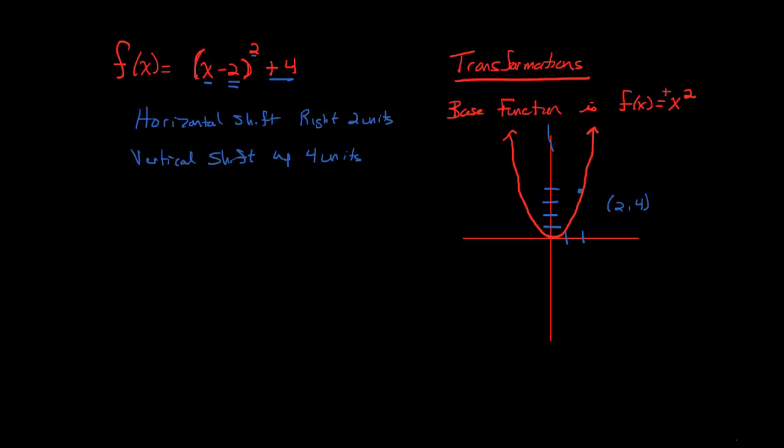So our new parabola is going to open up and look something like this. We're going to learn later that this apex right down here is something called the vertex. This is going to be the most minimal or most maximal value. It's going to be the minimum value or the maximum value.